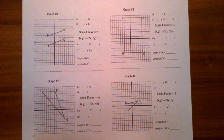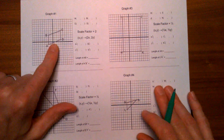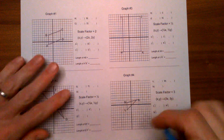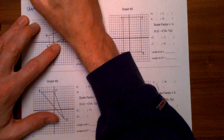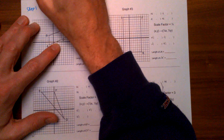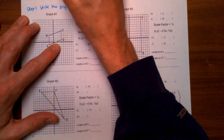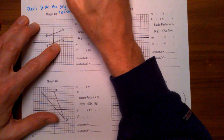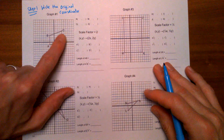Let's do a couple of these together and then I'll have you try some on your own. The first thing I want you to do — we're going to do this dilation with a scale factor of two. Let's do this part together. Step one: write the original coordinates.